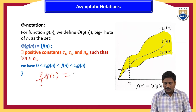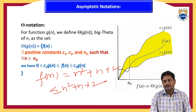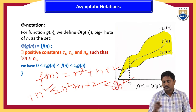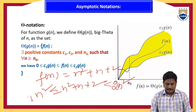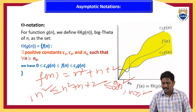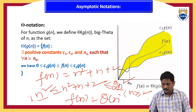Another example: f(n) = n² + n + 2. We verify n² ≤ n² + n + 2 ≤ 2n². For n = 1: 1 ≤ 4 ≤ 2, not satisfied. For n = 2: 4 ≤ 8 ≤ 8, satisfied. So for n ≥ 2 this is satisfied, and g(n) = n², so we write f(n) = Θ(n²).